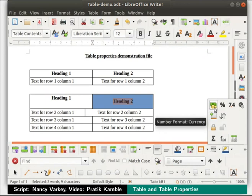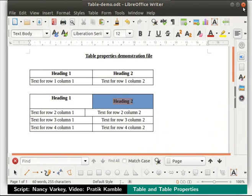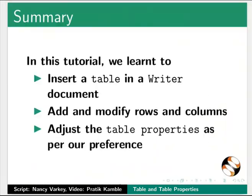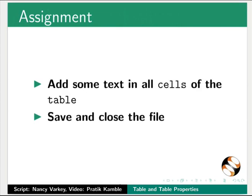Explore all these options on your own. Save our file by pressing Ctrl plus S keys and then close it by clicking on the X icon at the top right. This brings us to the end of this tutorial. In this tutorial, we learned to insert a table in a writer document, add and modify rows and columns, and adjust the table properties as per our preference. As an assignment, open practice.odt, insert a table with 3 rows and 2 columns, add the headings for the columns as column 1 and column 2, add some text in all cells of the table, then save and close the file.